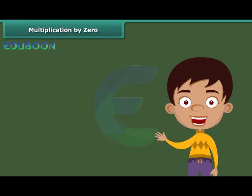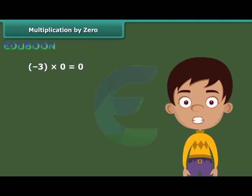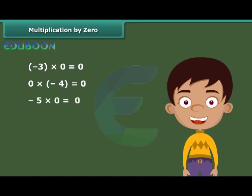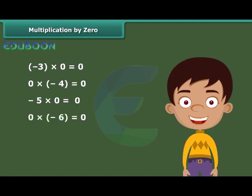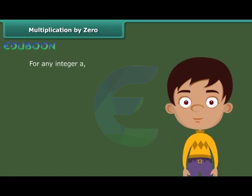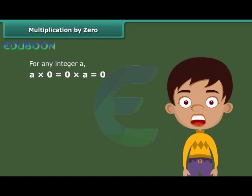The product of a negative integer and 0 is 0. For example, minus 3 into 0 equals 0, and 0 into minus 4 equals 0. In general, for any integer a, a into 0 is equal to 0 into a, which equals 0.